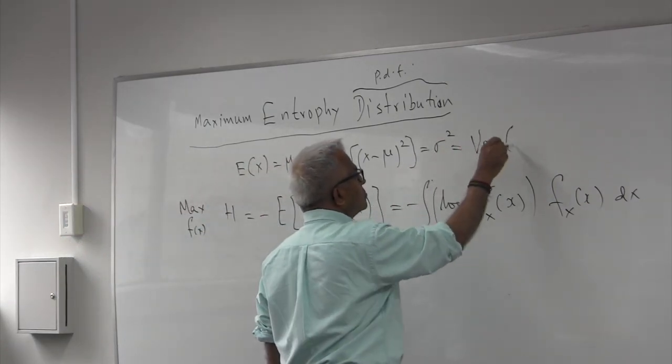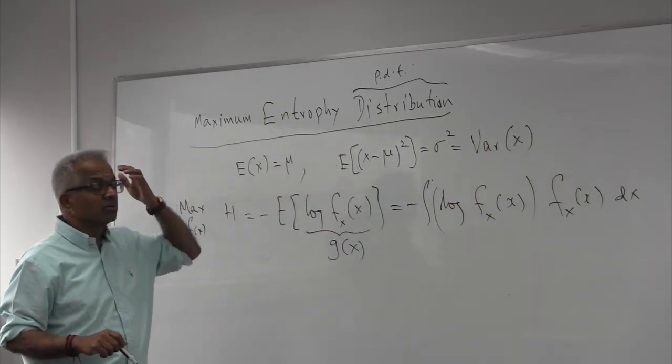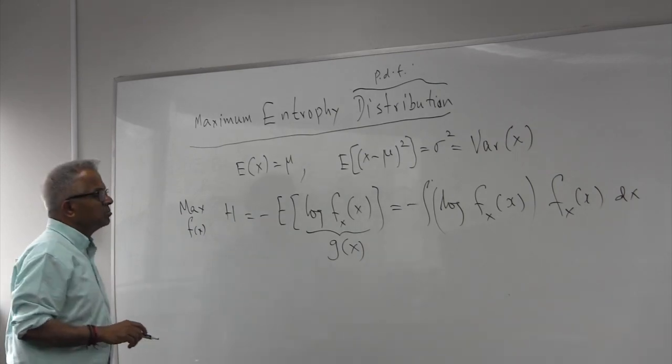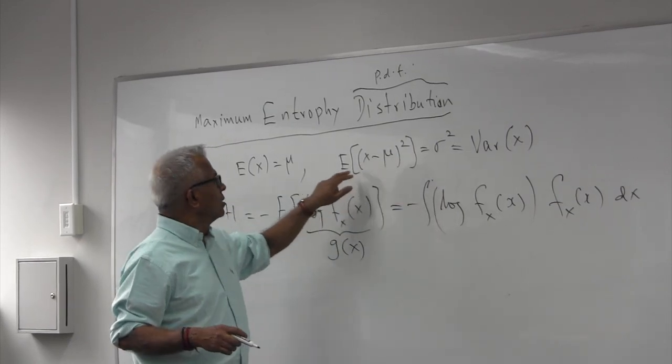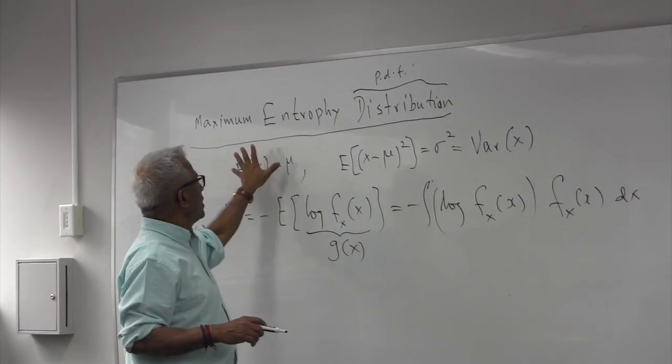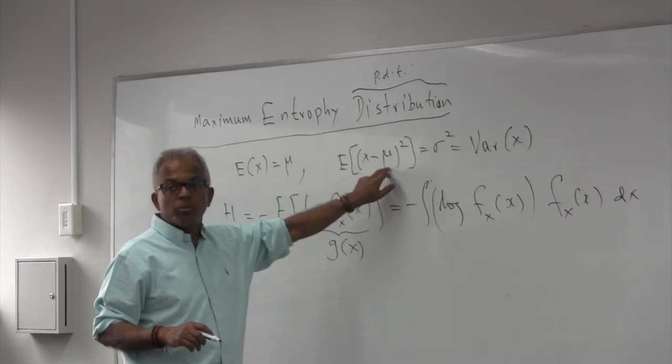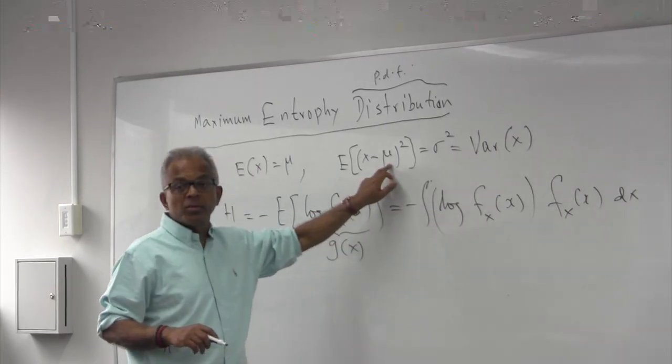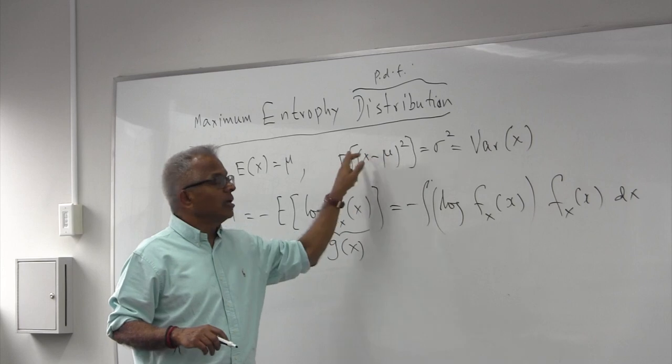Of course, the variance. Given mean and variance, find the distribution that maximizes. The usual technique is to, remember, the mean is already, you don't need this, because by writing like this, the mean is already imposed here. Because if this is the variance, this must be the mean. By definition, random variable minus the mean squared expected value.